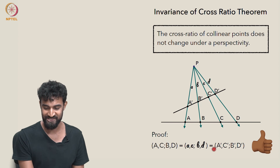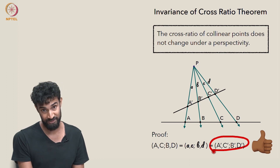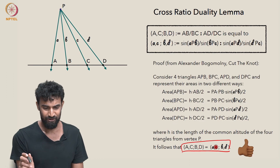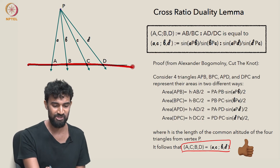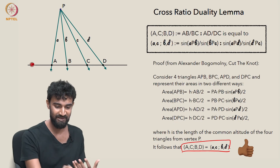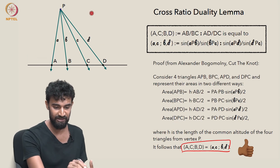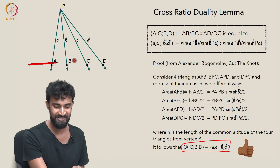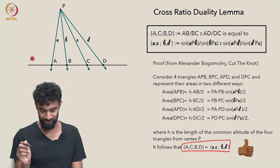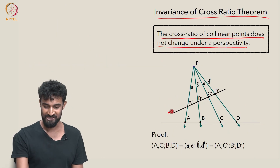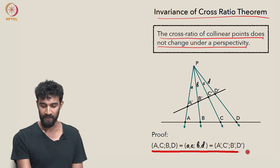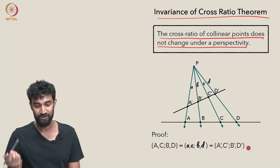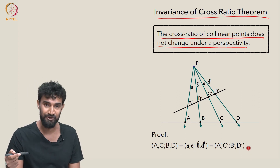So the cross-ratio of these four points equals the cross-ratio of those four points. Remember, in the cross-ratio duality lemma, the intersecting line was just any line that cut across the four concurrent lines — there was nothing special about it. So both lines give us points whose cross-ratios equal the cross-ratio of the lines. That proves that the cross-ratio is invariant under perspectivities.